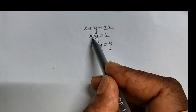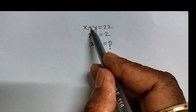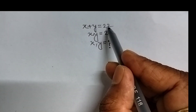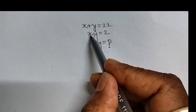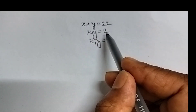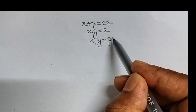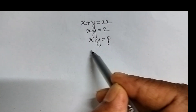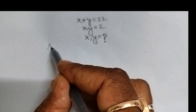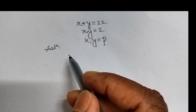Here, we have given x plus y equal to 22, and x times y equal to 2. This is our question — we will have to find the value of x and y. Let's see the solution.